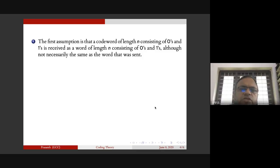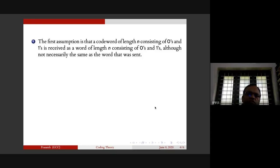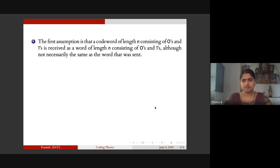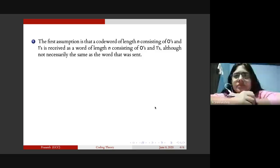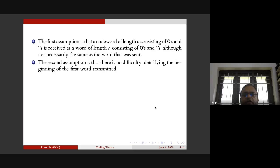Our assumption is that if you have a code word of length n consisting of zeros and ones and you transmit it, you will receive a word of length n consisting of zeros and ones. This is our first assumption - the length of the word will remain the same. It may not be the same word that you sent - you might have sent one and received zero - but if you have sent a five-length word, the receiver will also receive a five-length word.